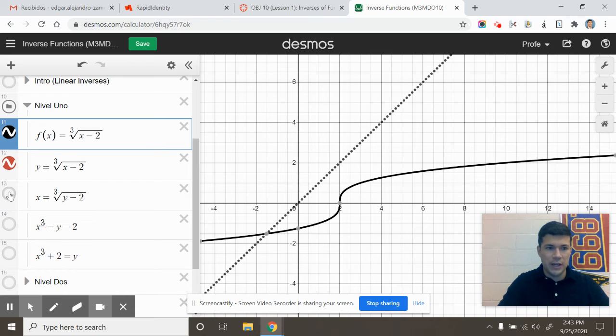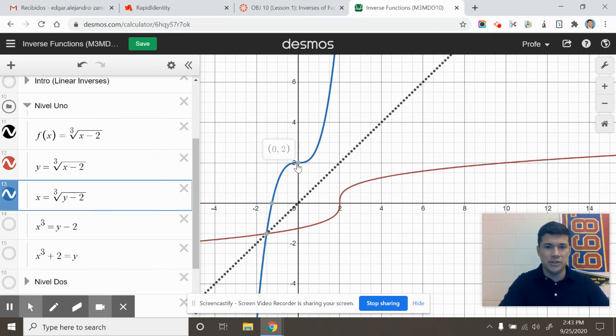Then, as usual, to find the inverse, I am going to invert the x and the y. That inverts the domain and the range, and you can see how it is symmetrical, with inverted points. There's a point at (0, 2) instead of (2, 0).